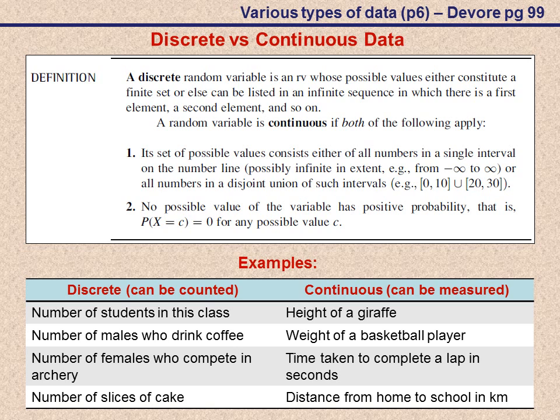That leads us to continuous data. By definition here, it says that a random variable is continuous if two conditions are made. The first one says that it's a set of possible values consisting either of all numbers in a single interval. So let's say we're considering the interval from zero to a hundred. Then it can take on any value in that interval, doesn't matter what the decimal value is.